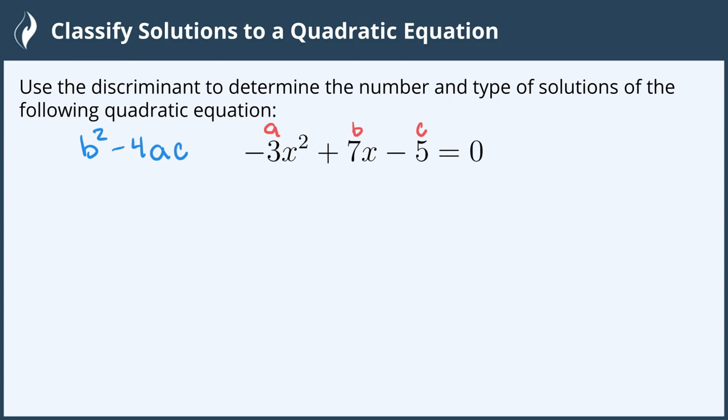The number we get when we calculate it out tells us what type and number of solutions we will get if we were to actually solve this quadratic equation. If we calculate it out and the discriminant is zero, this tells us we will have one rational solution.